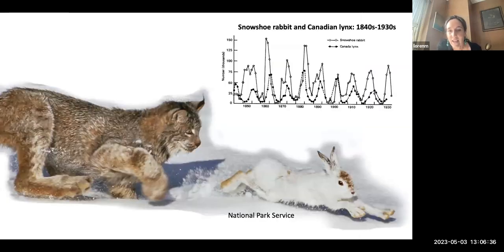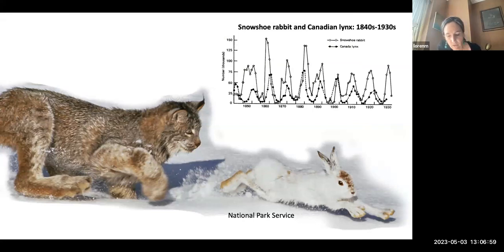I'm actually going to start on land with this classic ecosystem dynamic: the population cycles of predator-prey interactions. It's one of the most fundamental concepts in modern ecology. A graph like this probably appears in every undergraduate ecology textbook, and it was based on observations of population cycles of two species — the snowshoe hare and the Canadian lynx — over about a century, going back to 1850.